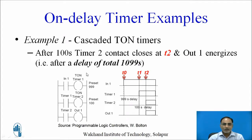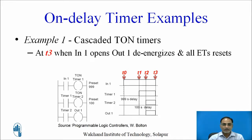After 999 seconds, timer 1 contact closes at t1 and timer 2 starts with PT equal to 100 seconds. At t2, after 100 seconds, timer 2 contact closes and output 1 energizes. The total delay inserted is 1099 seconds — with two cascaded on-delay timers you achieve a larger delay. At t3, when input 1 opens, output 1 and all ET values reset to 0.